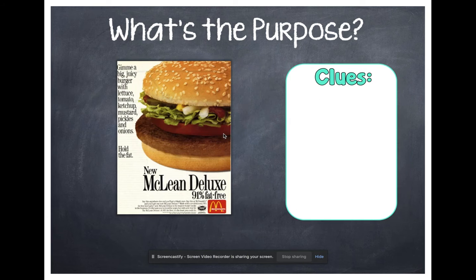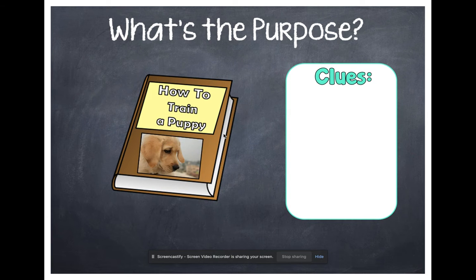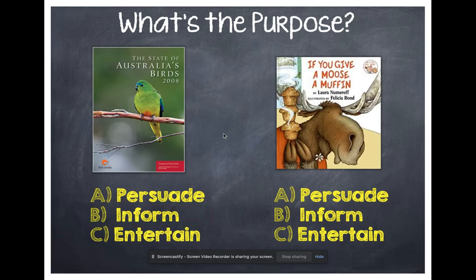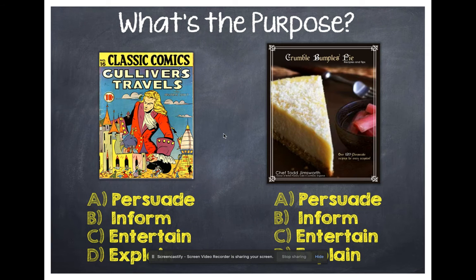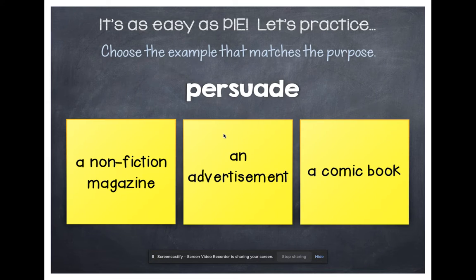So we looked at a few different examples. We're going to look at a couple more today before we complete our activity. We are going to look at the different types of author's purpose and choose an example that matches the purpose.